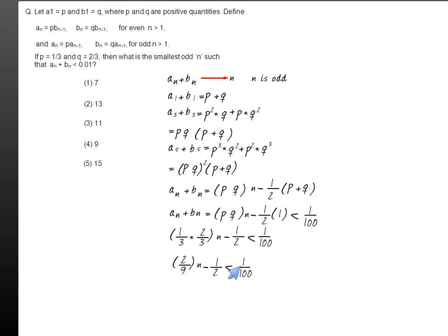So we will find that the value of n minus 1 by 2 has to be greater than or equal to 4, for which the left-hand side becomes less than 1 by 100.